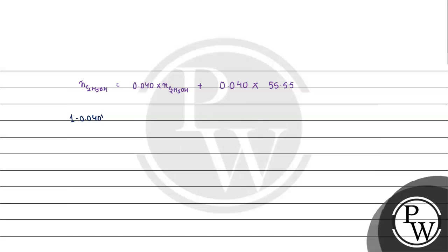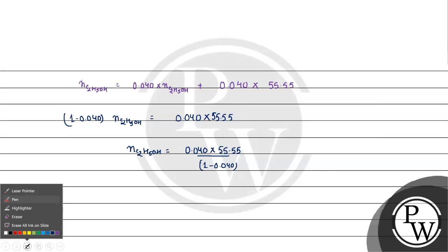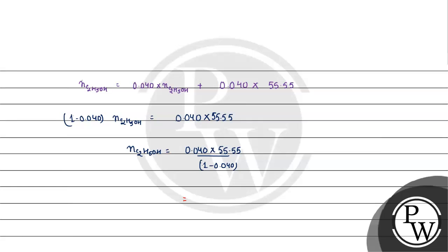So: 1 minus 0.040 times the number of moles of ethanol equals 0.040 times 55.55. Solving, the number of moles of ethanol equals 0.040 times 55.55 divided by 1 minus 0.040, which comes out to 2.22 divided by 0.96, giving 2.3125 moles of ethanol.